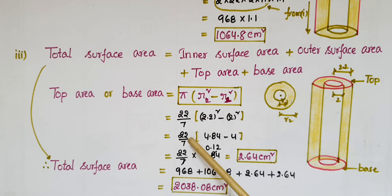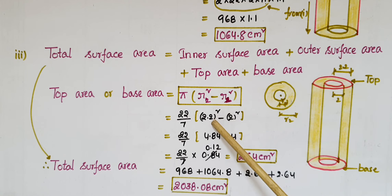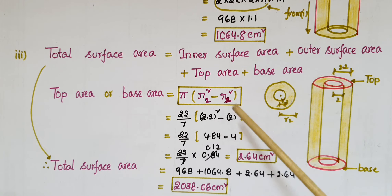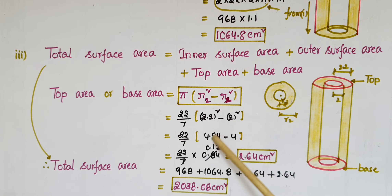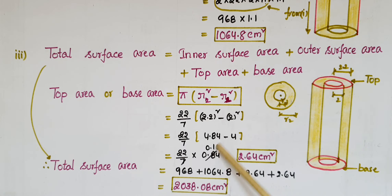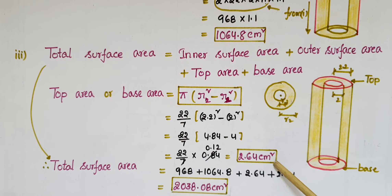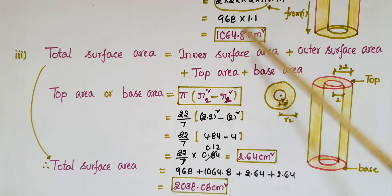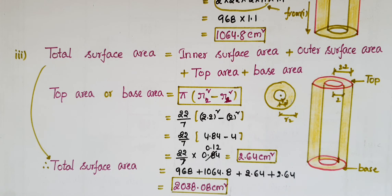Substituting: 22/7 into (2.2 squared minus 2 squared) = 22/7 into (4.84 minus 4) = 22/7 into 0.84. Seven ones are 7 and 0.12 into 22 gives 2.64 centimeters squared for each of the top and base areas. Therefore, total surface area = 968 + 1064.8 + 2.64 + 2.64 = 2038.08 centimeters squared.